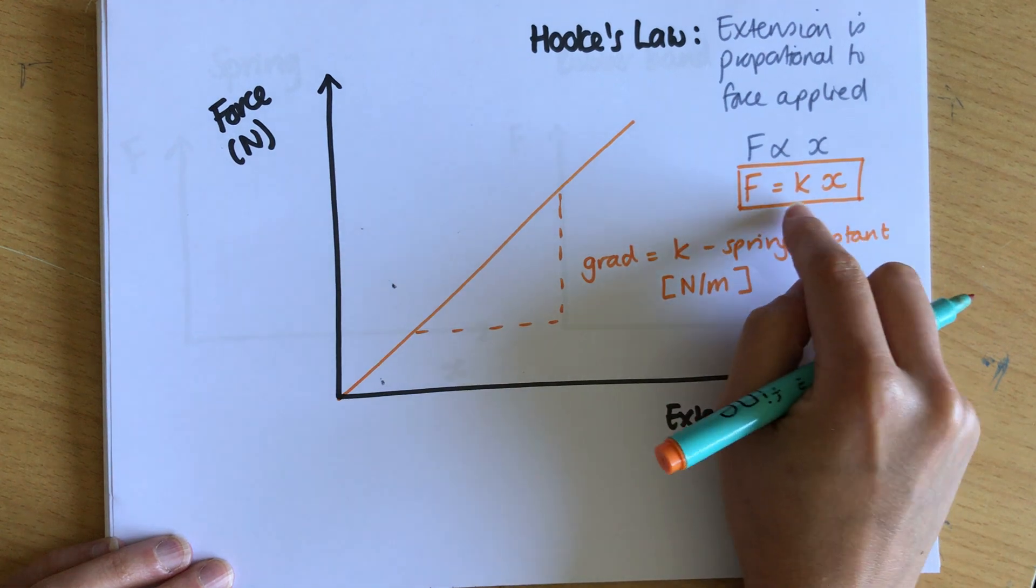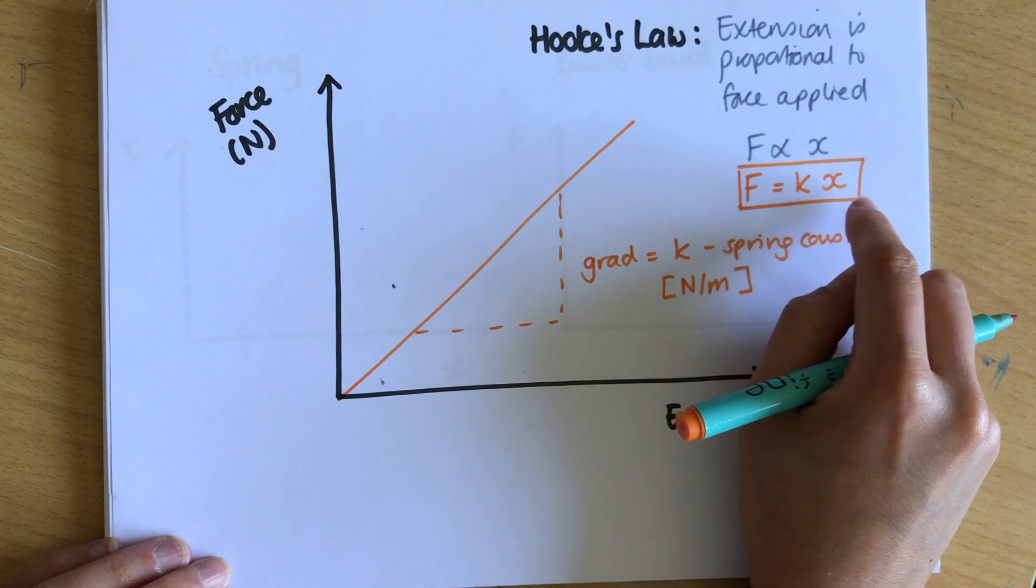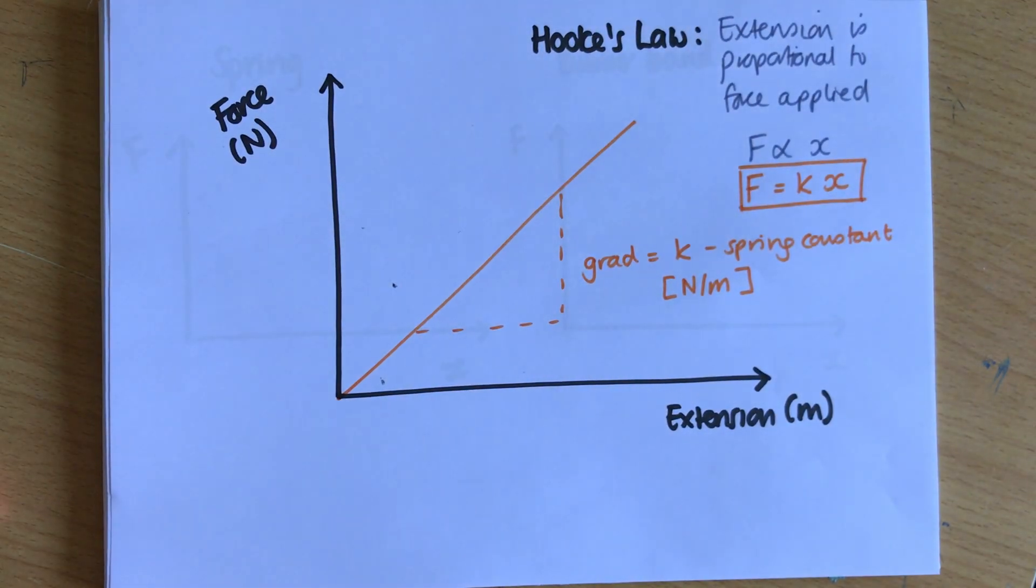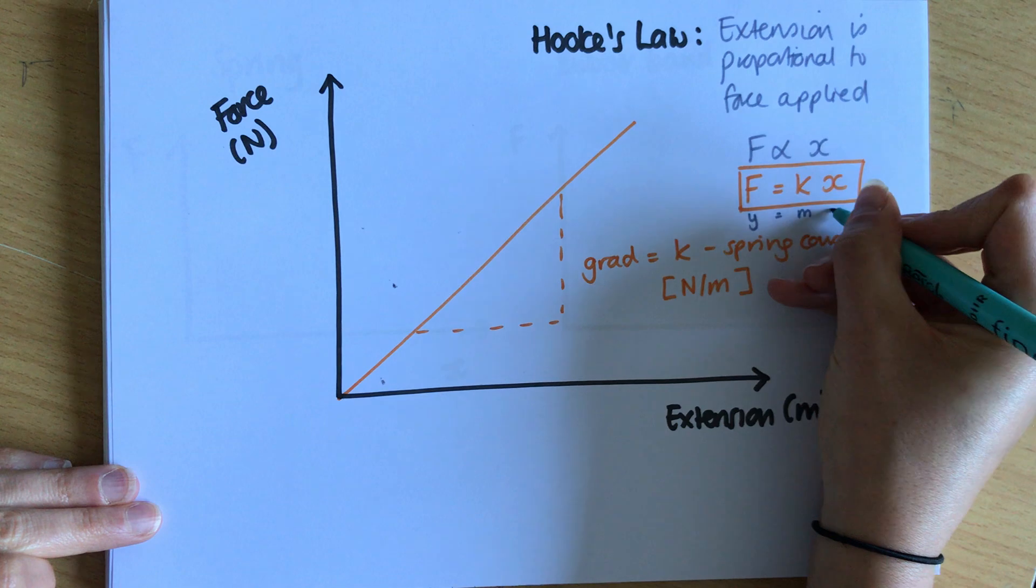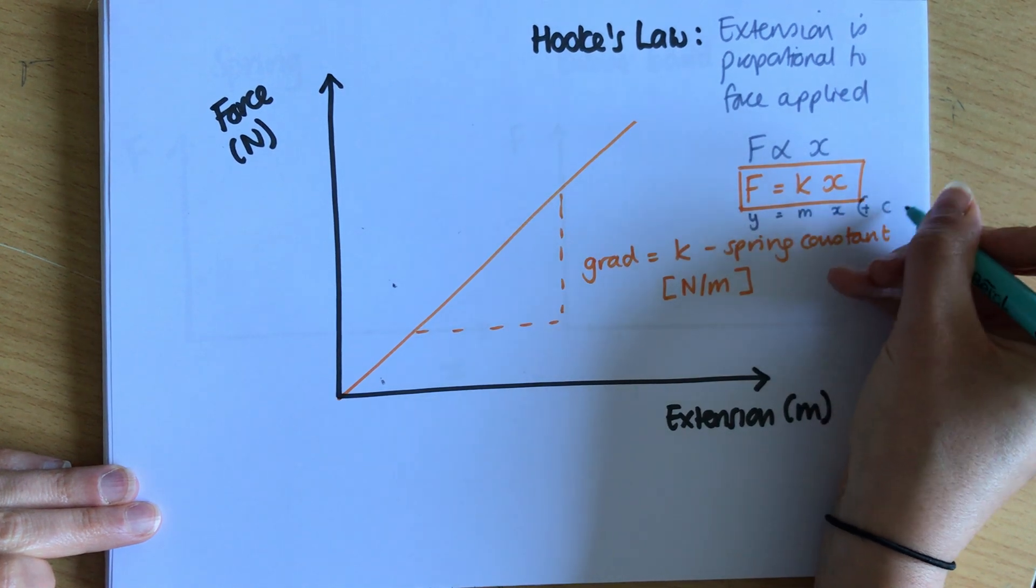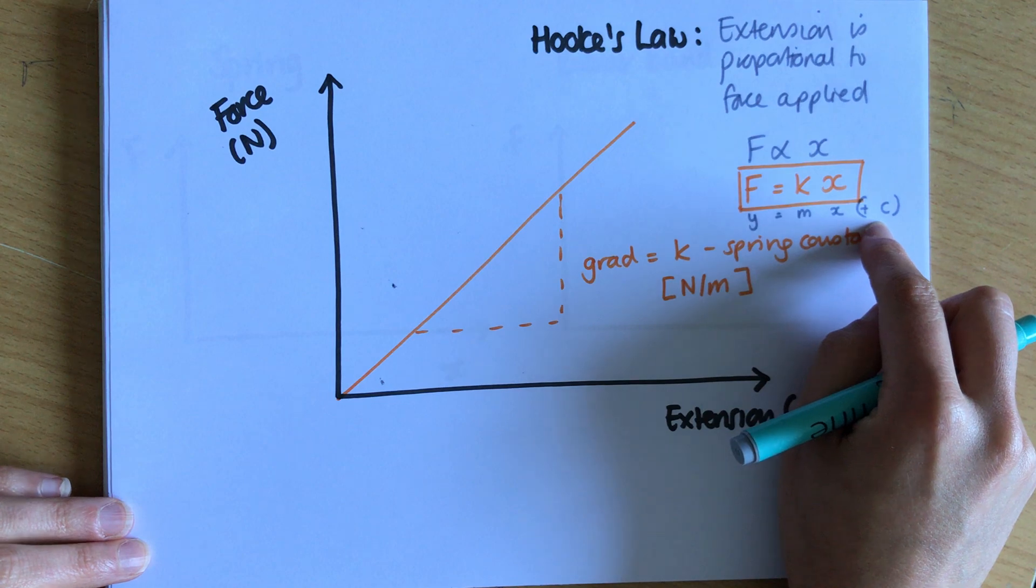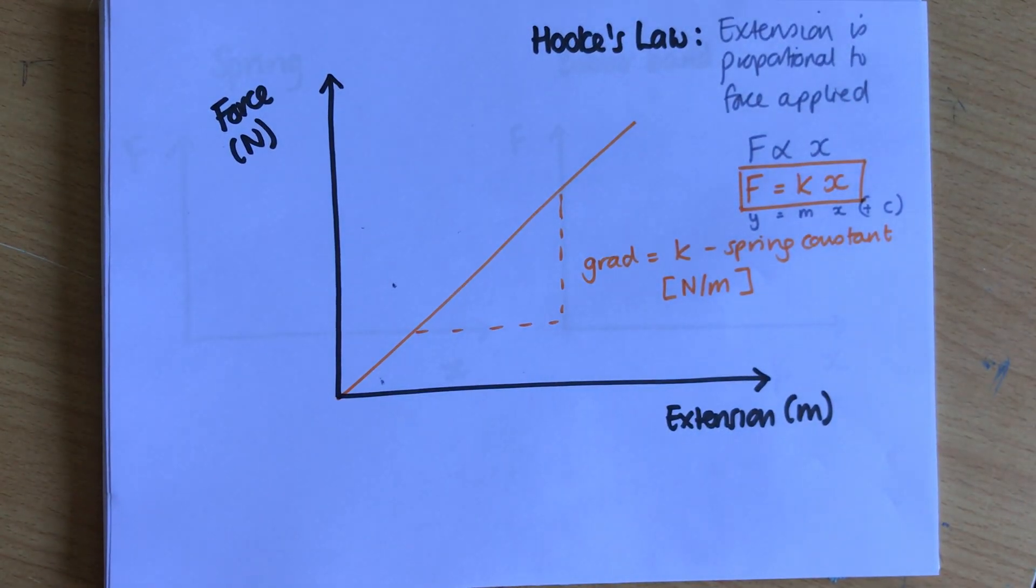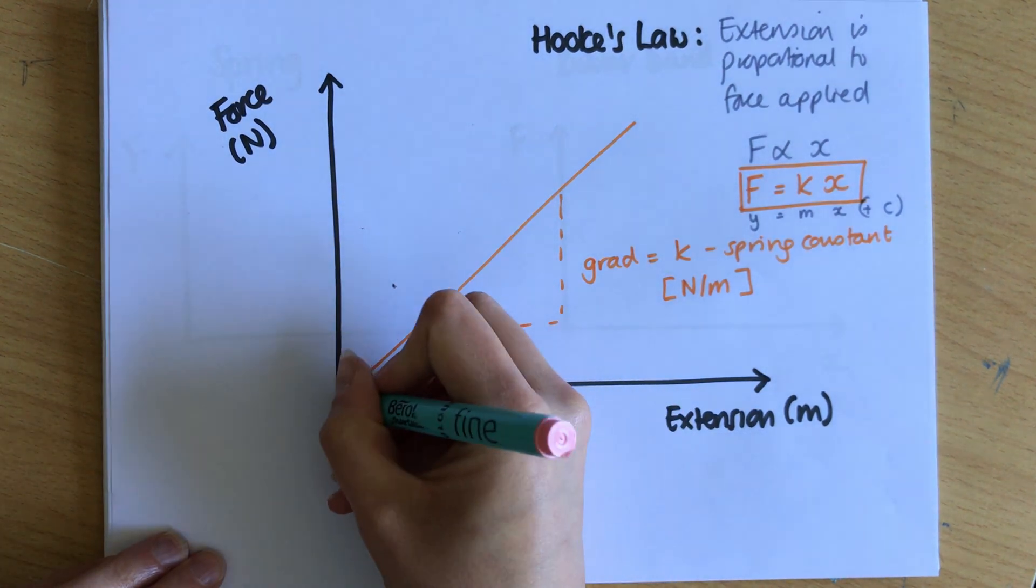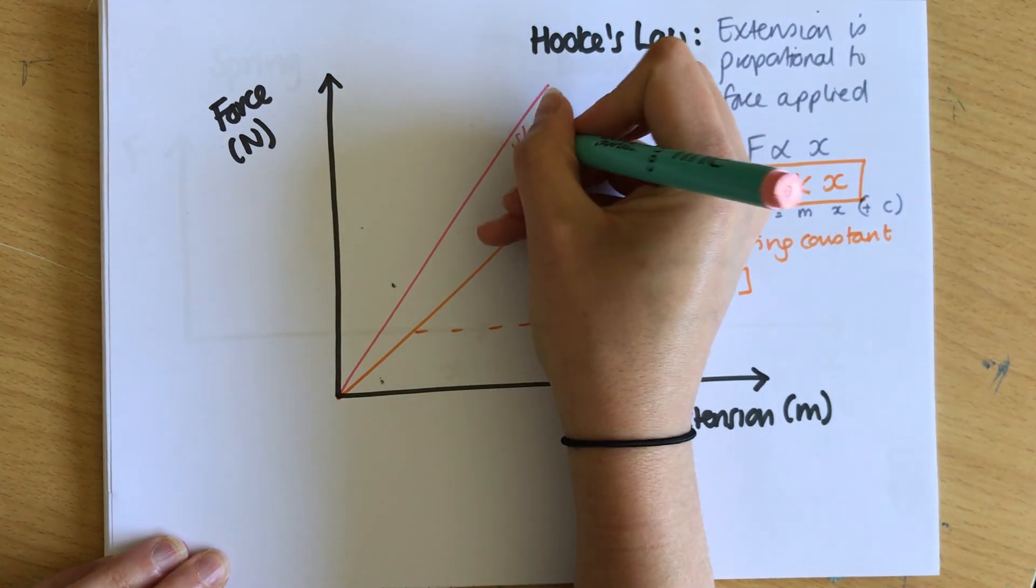Force applied equals the spring constant, which is the gradient of the graph, times X. And if you are a mathy person you might like to think that this corresponds to y equals mx plus c—there's no c because there's no y-intercept and m is the gradient. Now if I have a stiffer spring the gradient will be higher, so this would be a stiffer spring.